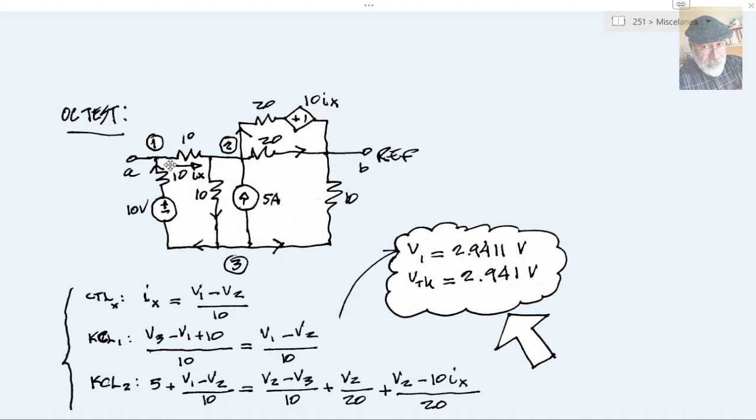Why are you calling that a node? Because I can. It's convenient for me. V1 will be directly the open circuit voltage and V_Thevenin. So, let's proceed.